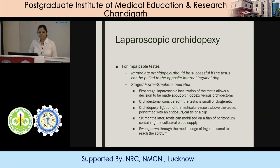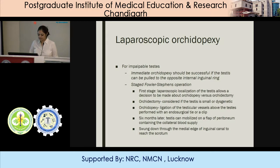Laparoscopic orchiopexy is recommended for impalpable testes. If the testes can be pulled and brought down till the opposite internal inguinal ring without any tension, then immediate orchiopexy can be done. A staged Fowler-Stephens operation is done if the length is not adequate, in which post-stage laparoscopic localization of the testes is done, allowing a decision to be made about orchiopexy versus orchidectomy. Orchidectomy is considered if testes is small or dysgenetic, whereas if orchiopexy is to be done, ligation of testicular vessels is done above the testes with an endosurgical tie or clip. Six months later, the testes can be mobilized on a flap of peritoneum containing the collateral blood supply and brought down to the scrotum.